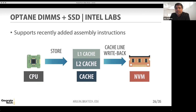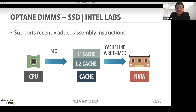One instruction worth noting is the cache line writeback instruction. When you persist data in your CPU cache using stores and want to ensure it's actually persistent on NVM, you use the cache line writeback instruction rather than the typical cache line flush instruction. From a cache coherence protocol standpoint, the next access to that cache line won't be a miss — you only write back data to NVM while keeping a copy in the CPU cache in a different cache-coherent state.